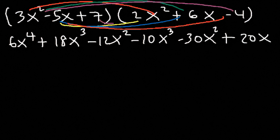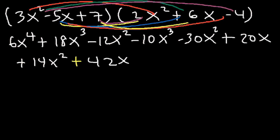7 times 2x squared is 14x squared. 7 times 6x is positive 42x. And finally 7 times negative 4 is negative 28. I'll take a minute to double check everything. Everything is correct — we have 9 terms at this point. Now let's go ahead and combine like terms.